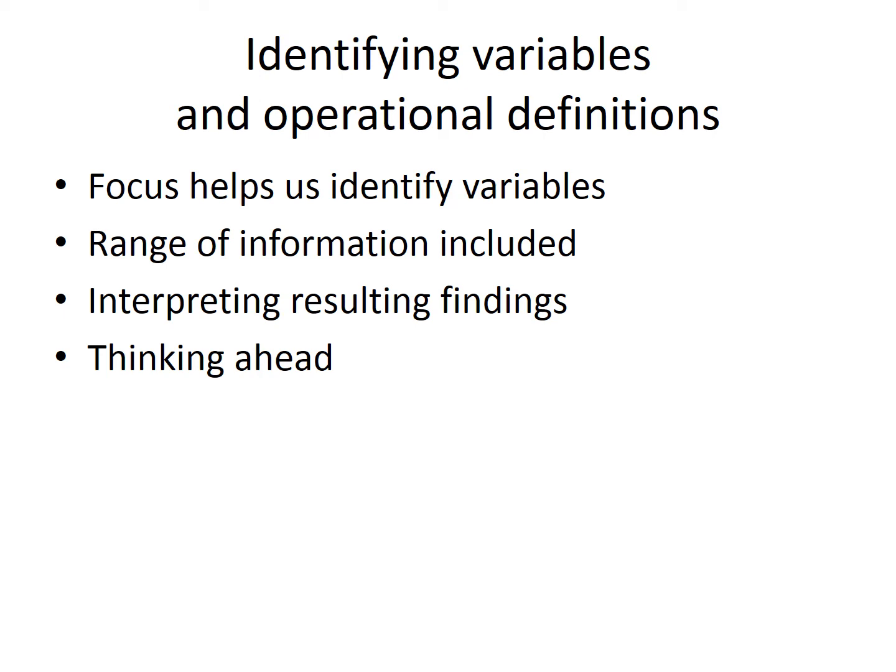You might have gotten the impression that information about operational definitions can be presented in a number of different ways, and that's an accurate impression. Authors don't always present measures consistently within an article, let alone across articles, so it's helpful to skim the entire method section. We go to that trouble because it helps us understand what the authors are really talking about when they discuss their findings. Having the names of the measures and the citations when available can also be helpful in the later stages of the research process.